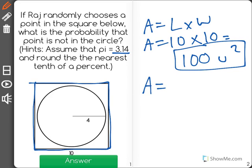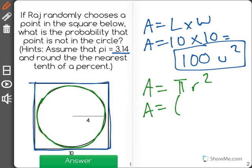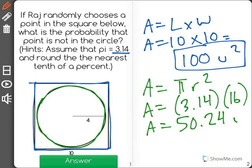Now I'm going to find the area of the circle. The formula for area of a circle equals pi r squared. In this case, it says to keep pi at 3.14, and r squared is 16. When I multiply those two together, I get a total of 50.24 units squared.